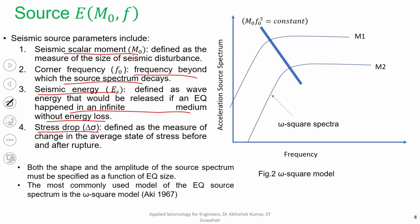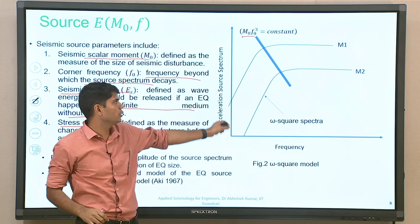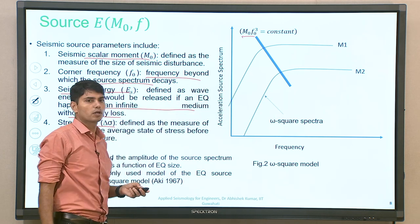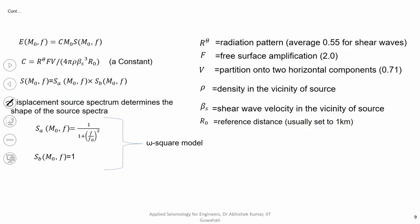Both the shape and amplitude of the source spectrum must be specified as a function of earthquake size. Two source spectra are given — corresponding to magnitude M₁ and M₂ — where both have the unique characteristic that M₀ times the cube of corner frequency is maintained constant. This is maintained constant in the source spectrum corresponding to M₁ or M₂ in terms of the omega-square point source model.